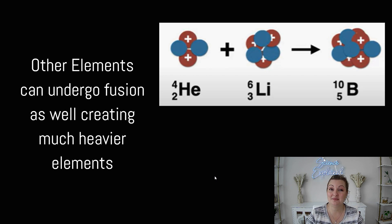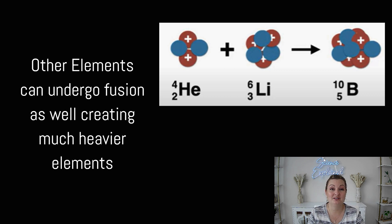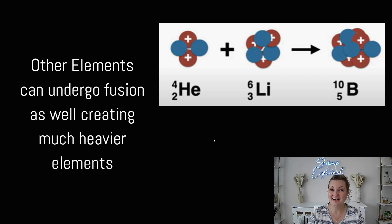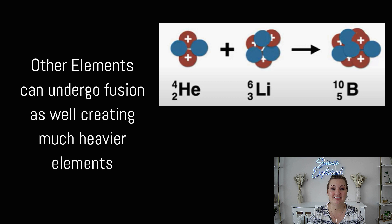Now, this can happen with other elements too. It doesn't just have to happen with the smallest one, hydrogen. It can happen with larger elements as well, and I'm giving you one more example here: we have helium combining with lithium, and we are going to produce a boron atom. I just want to make a note — this is really the tip of the iceberg when it comes to creating larger nuclei and more elements off the periodic table. So don't think this is the end-all be-all of it. However, this is the basics of how we get started.